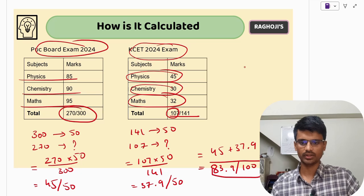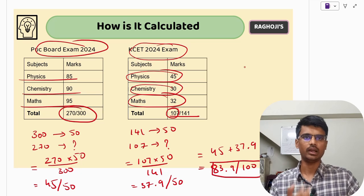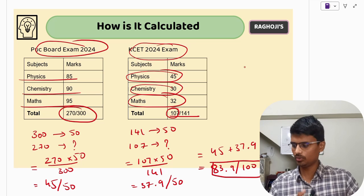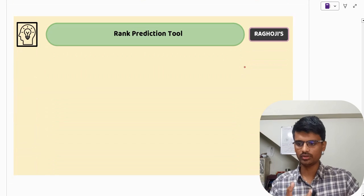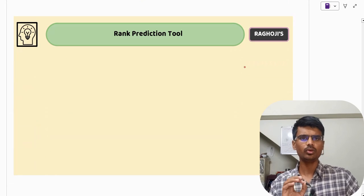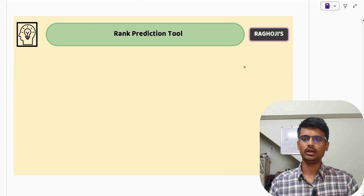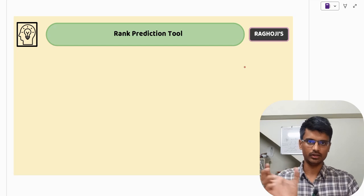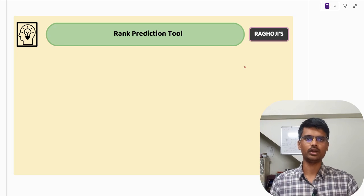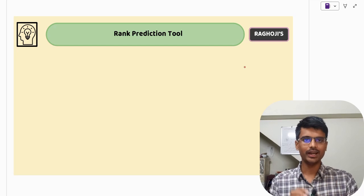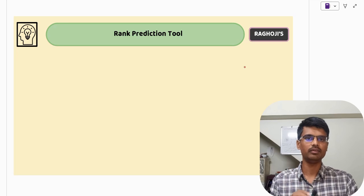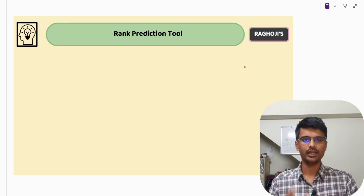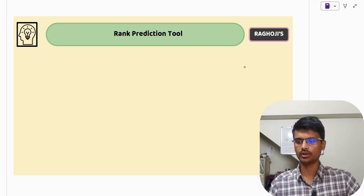Coming back to the video. I'll show you an example. A student has scored in PUC board exam 2024, physics 85, chemistry 90, maths 95, 270 marks. And in KCET exam, he has scored 45 marks, 30 and 32 marks. Now he has scored 107 out of 141 marks. So how is the rank calculated? How is the score calculated? 300 marks means 50%. So 270 is how much? We will just cross multiply 270 into 50 divided by 300, which comes out to be 45 marks out of 50.